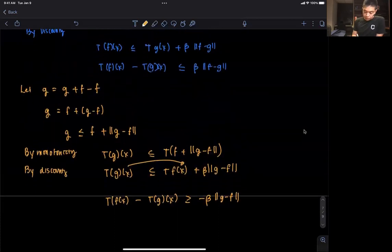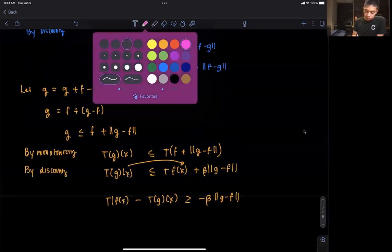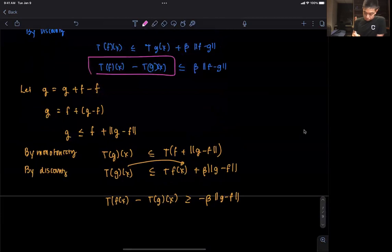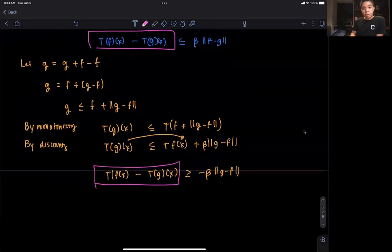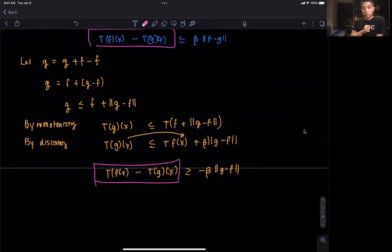The reason why is, if you notice, these two things, this form here and this form here are exactly the same. It's just that the signs between them are different, which means that this expression here boxed in pink is bounded by these two intervals.